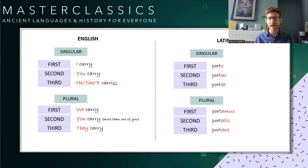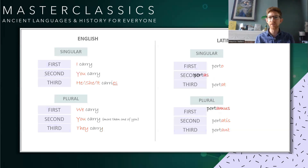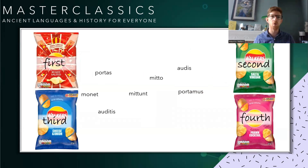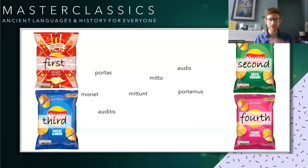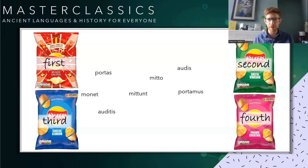We looked at verbs like porto, portas, portat; amo, amas, amat; narro, narras, narrat. We reminded ourselves that different verbs belong to different families which we call conjugations, and we assigned them to crisp flavours. First conjugation verbs — amo, amas, amat, amamus, amatis, amant — with their 'a' in their ending, are like ready salted crisps. Second conjugation verbs like moneo — moneo, mones, monet, monemus, monetis, monent — have the 'e' ending all the way through.